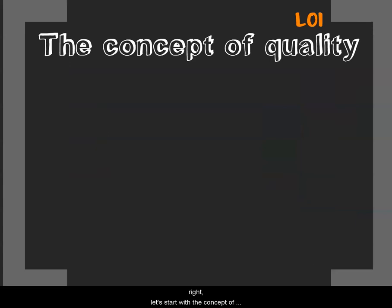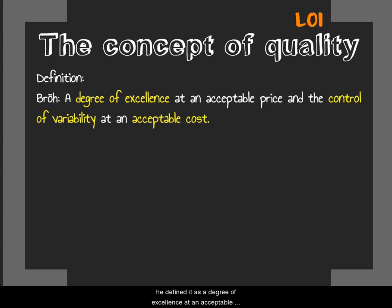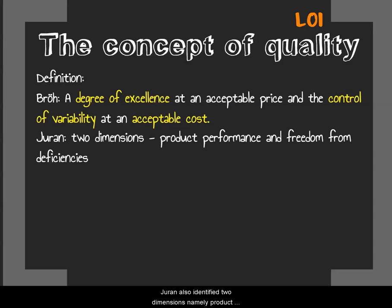Let's start with the concept of quality, found on page 35. To describe and define quality is not easy, because it's down to your own perception, and another person's perception can be different. The author Bro defined it as a degree of excellence at an acceptable price, and the control of variability at an acceptable cost. Euron also identified two dimensions, namely product performance and the freedom from deficiencies, which links to heterogeneity.